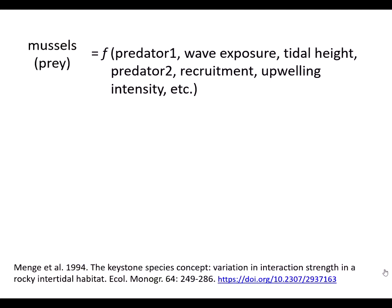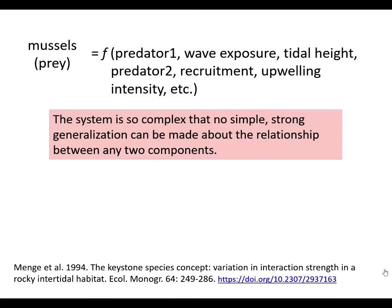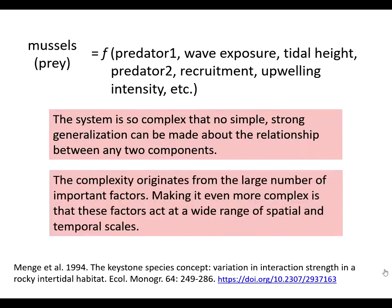The complexity of this system has been shown by decades of study by scientists on the west coast of North America. The system is so complex that no simple, strong generalization can be made about the relationship between any two components. The complexity originates from the large number of important interacting factors.